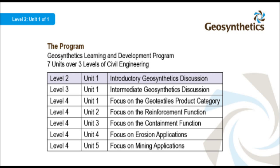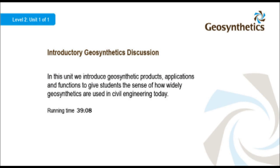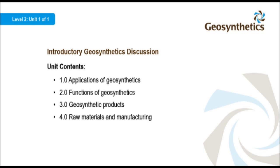The program consists of seven mini lectures moving from an introductory discussion through an intermediate stage, where we examine common civil engineering structures, before focusing on some common functions and applications. This topic is the introductory discussion, developed for second-year undergraduate civil engineers. In this unit we introduce geosynthetic products, applications, and functions to give students a sense of how widely geosynthetics are used in civil engineering today. We will also introduce the general product categories and touch on aspects of the manufacturing and quality assurance processes.